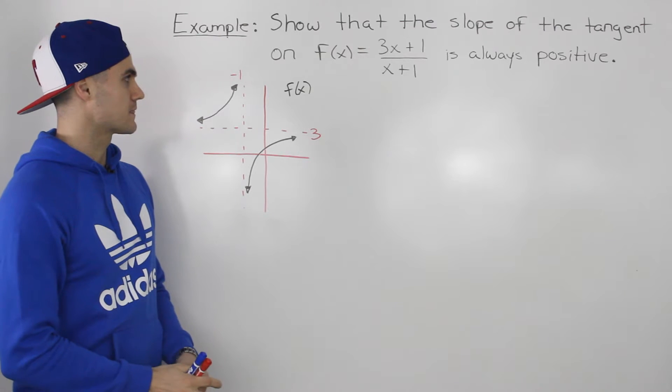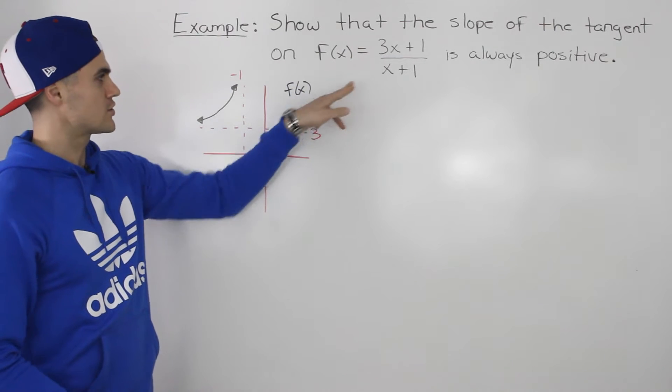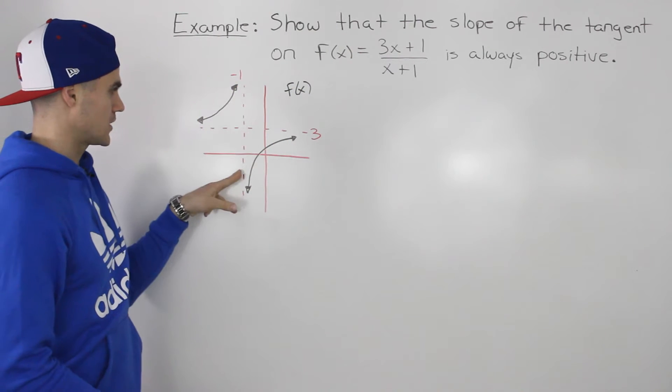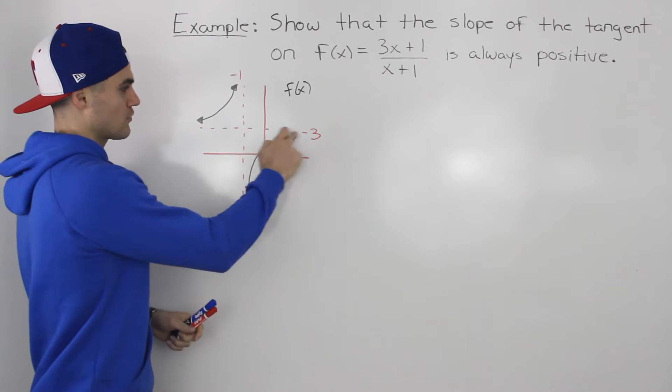Well, if we take this function and graph it, it's a linear over a linear function, so there's going to be a vertical asymptote at -1 and a horizontal asymptote at 3.